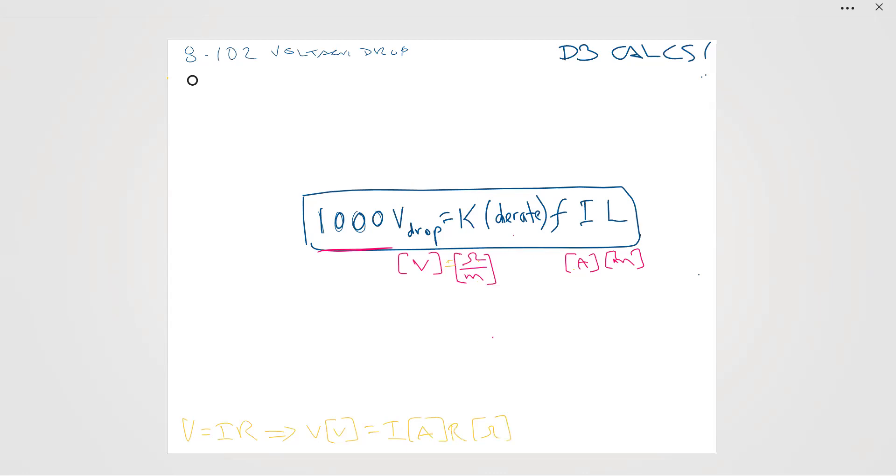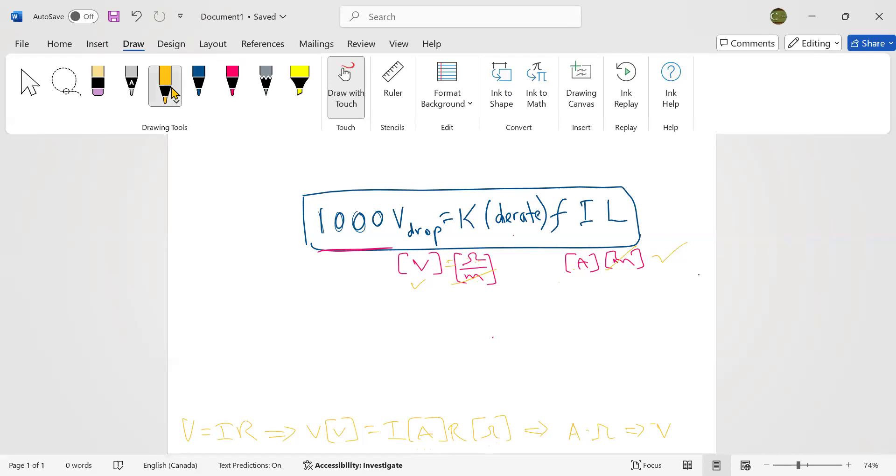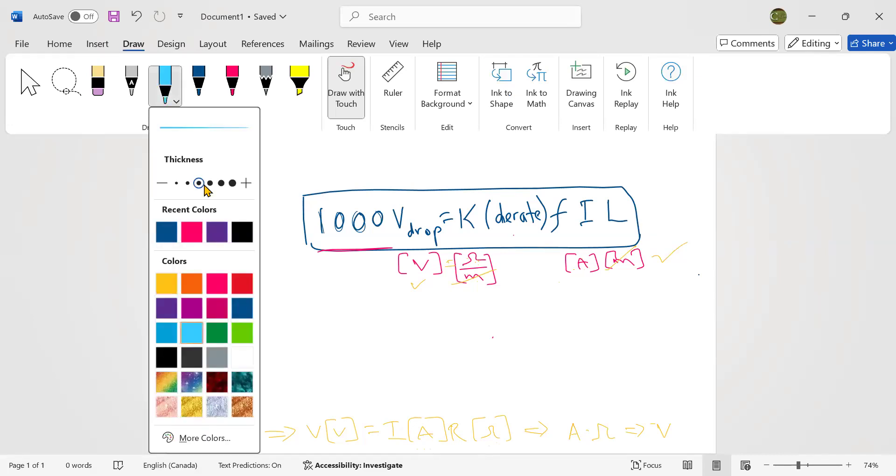So I have A and R here. A times R. Therefore, A times resistance, amps times ohms is equivalent to voltage. So I have voltage on this side. I have meters in the numerator. I have meters in the denominator. They cross out and I get ohms times amps. And then ohm times amps is a volts. Therefore, my units check out. So it's just always good to know and good practice to make sure that our units check out.